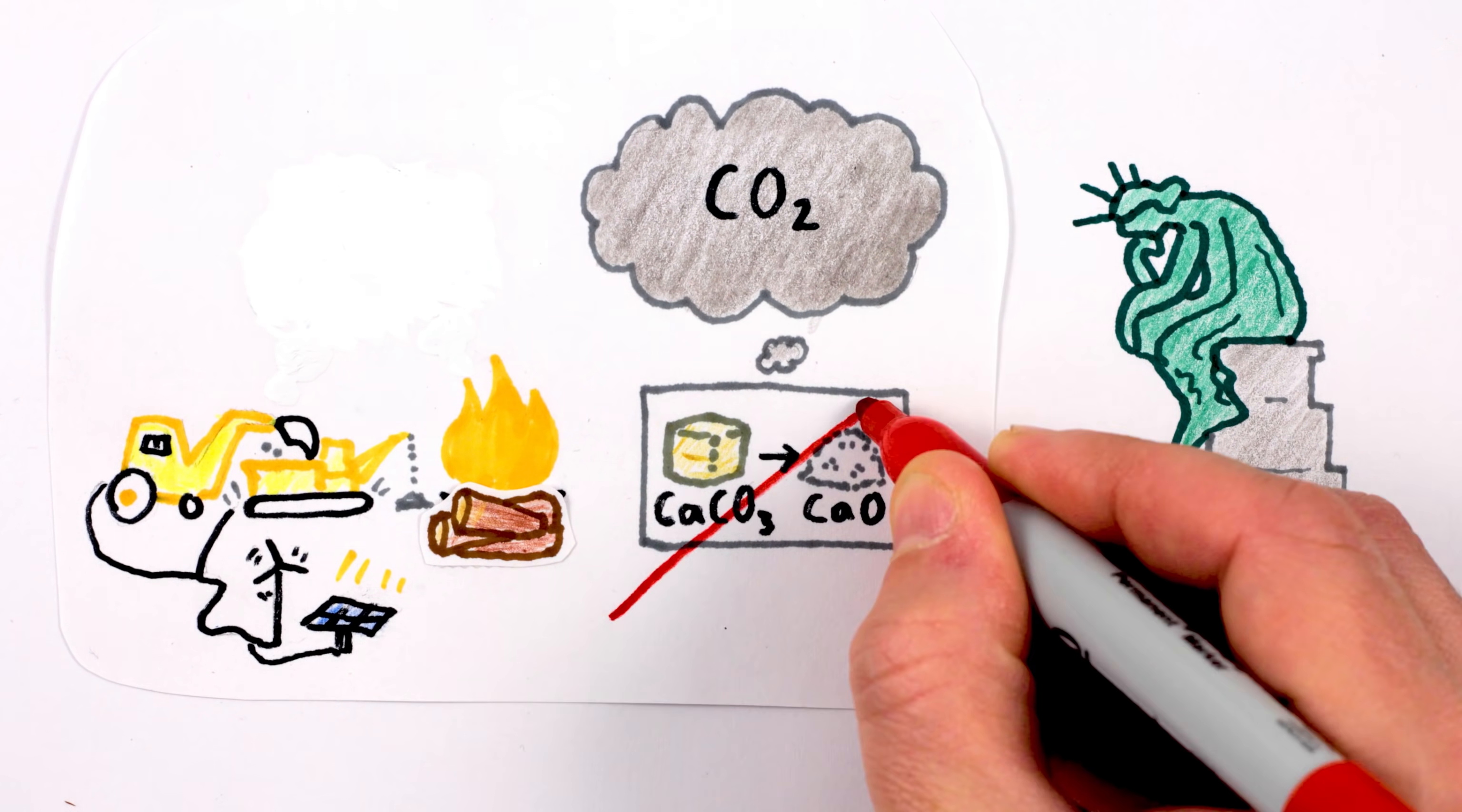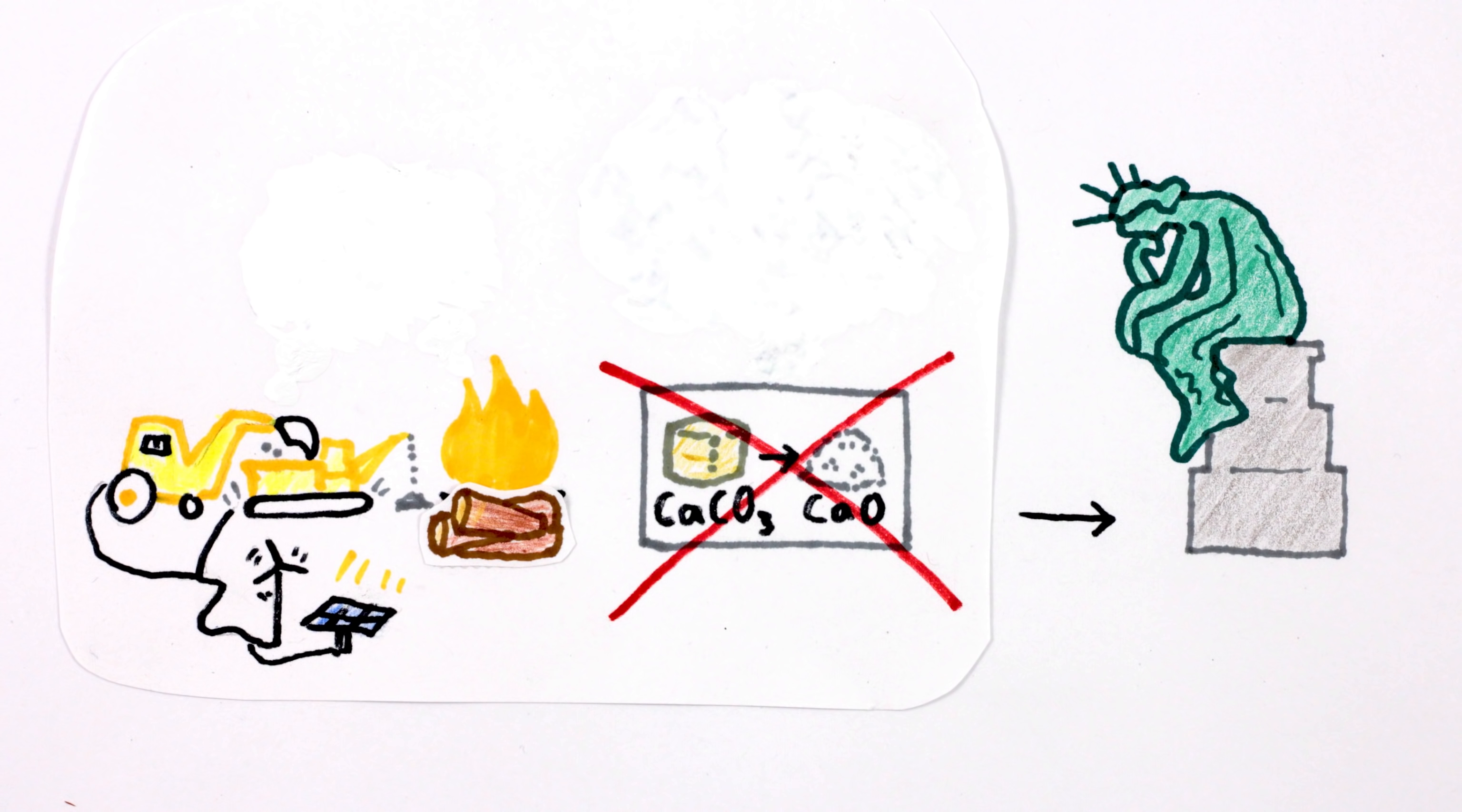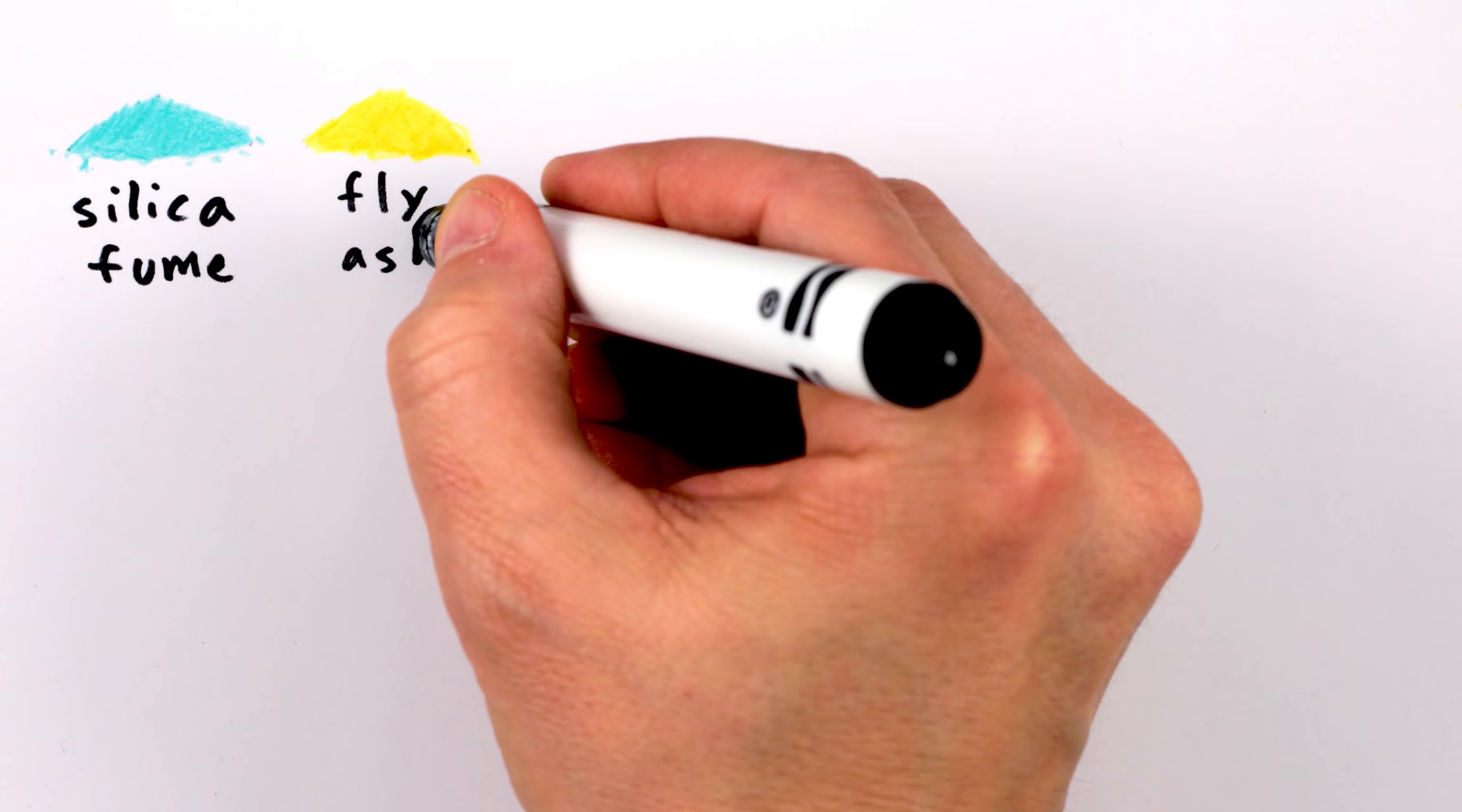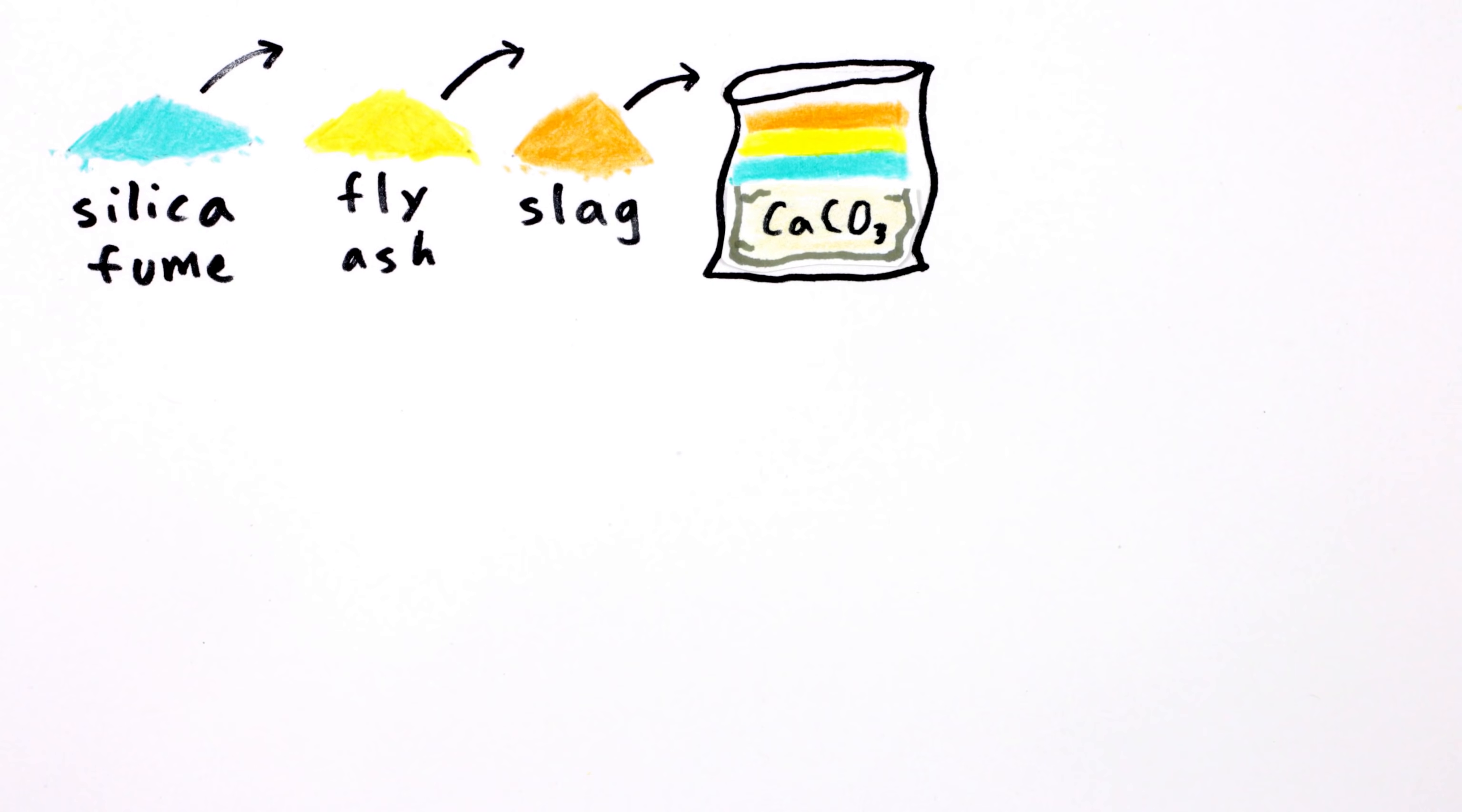But the real game-changer would be to stop using limestone itself in cement. Then it wouldn't release CO2 when it breaks down. And there actually are alternatives out there already, some of which can reduce the amount of limestone needed, and others that can replace limestone completely.